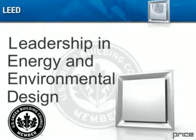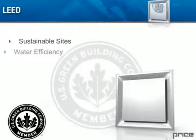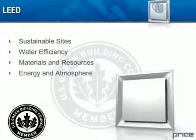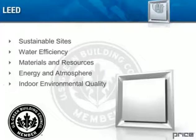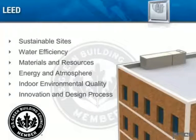The program is based on these primary categories: sustainable sites, water efficiency, materials and resources, energy and atmosphere, indoor environmental quality, and innovation and design process. Points and credits are awarded for various items in each of these categories. Buildings are deemed LEED certified buildings if they earn a certain number of points.